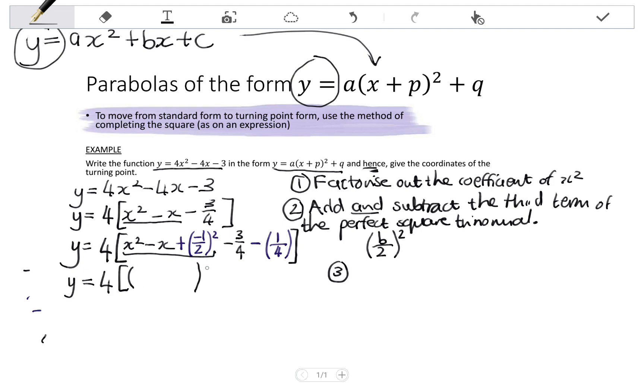The way we factorize is we square root the first term, so the square root of x squared is x. I square root the last term. This is where it's very helpful to leave your third term as you have calculated it. Because if I square root this bracket squared, I'm left with exactly what's inside the bracket, negative 1 half.